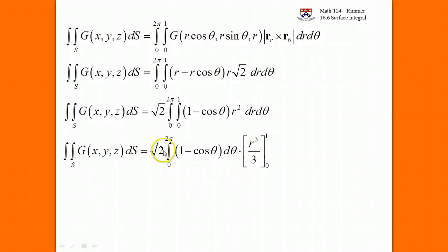So r cubed over 3 from 0 to 1 gives you a third. That third can come out and be multiplied by the root 2. Then we integrate 1 minus cosine theta. But actually, this is a whole period of cosine theta, so it's going to be 0, the area under the curve there. So we're just going to end up with a theta here.